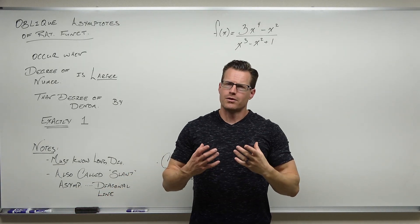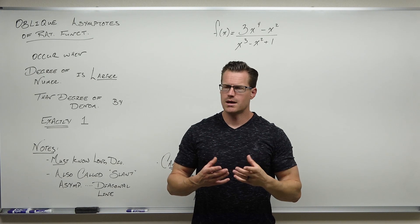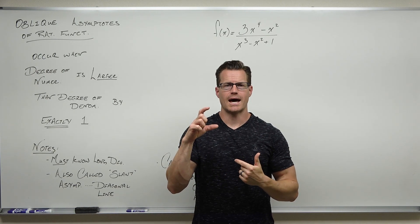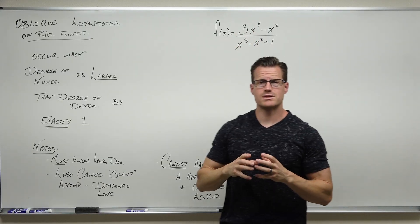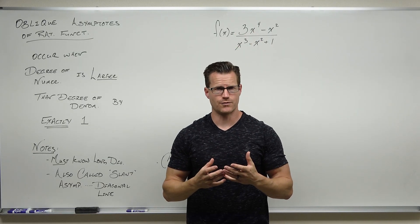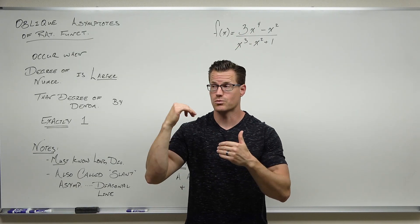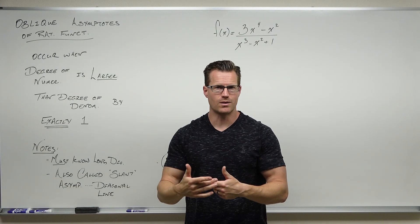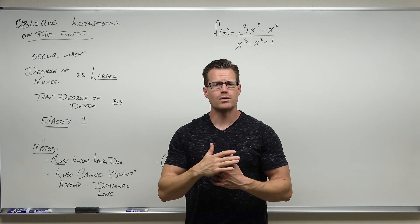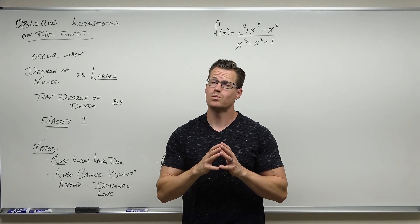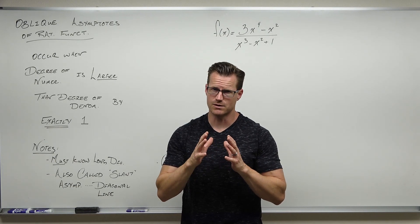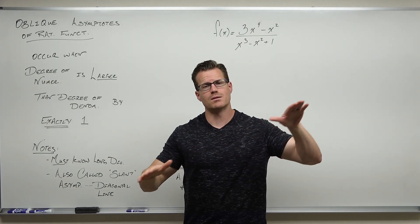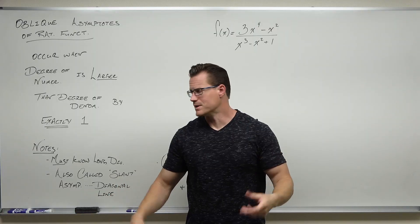Think about this: if the degree of the numerator is larger by one, then by our leading terms you'd have two power functions that simplify, and you'd end up with something like 3x to the first power — and 3x to the first power is a line with a slope of 3. Then we do long division for one more step. That's why this happens: if the degree of the numerator is larger by one, you divide, you get a line, and that models the end behavior.